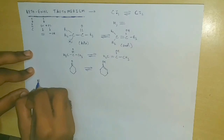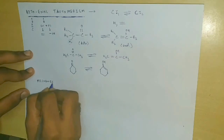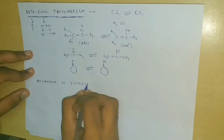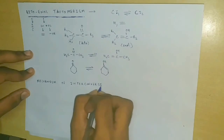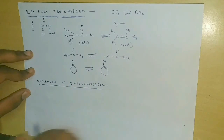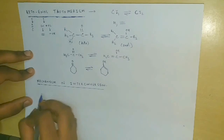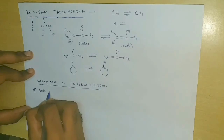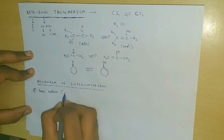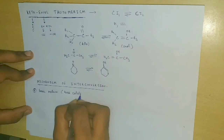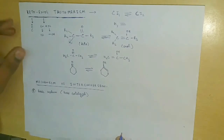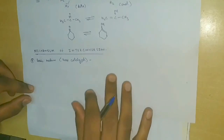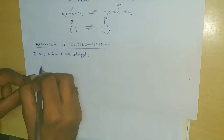Let's come to the mechanism of interconversion from Keto to Enol. The interconversion can take place in both acidic as well as in basic medium. First, let's talk about the interconversion in basic medium, or the base-catalyzed interconversion. Here we make use of the fact that the hydrogen on the alpha carbon atom — or the alpha hydrogen — is slightly acidic in Keto compounds, and when a base or the hydroxide anion removes a proton from this molecule, the intermediate so formed is stabilized by resonance.